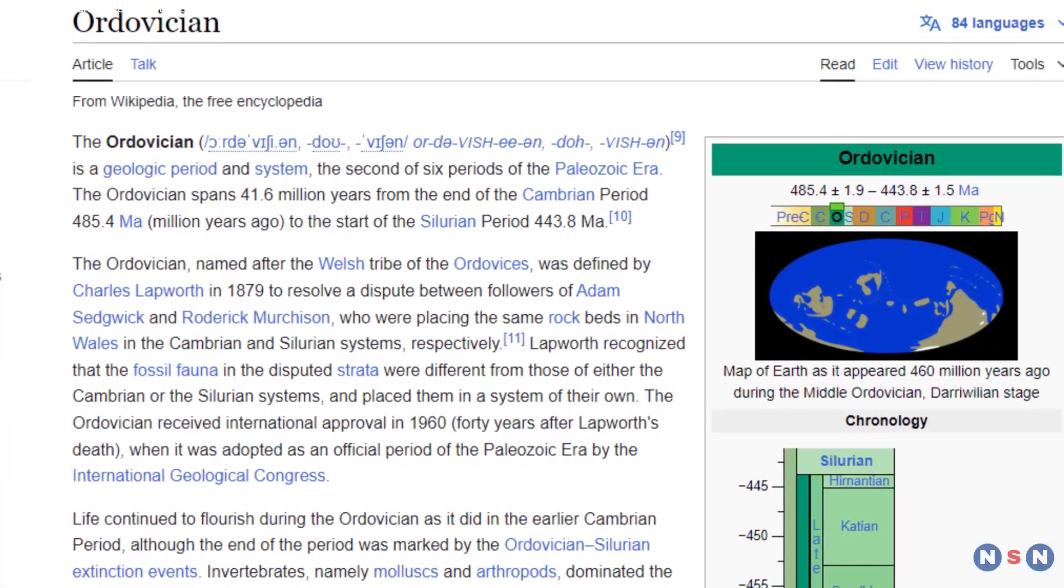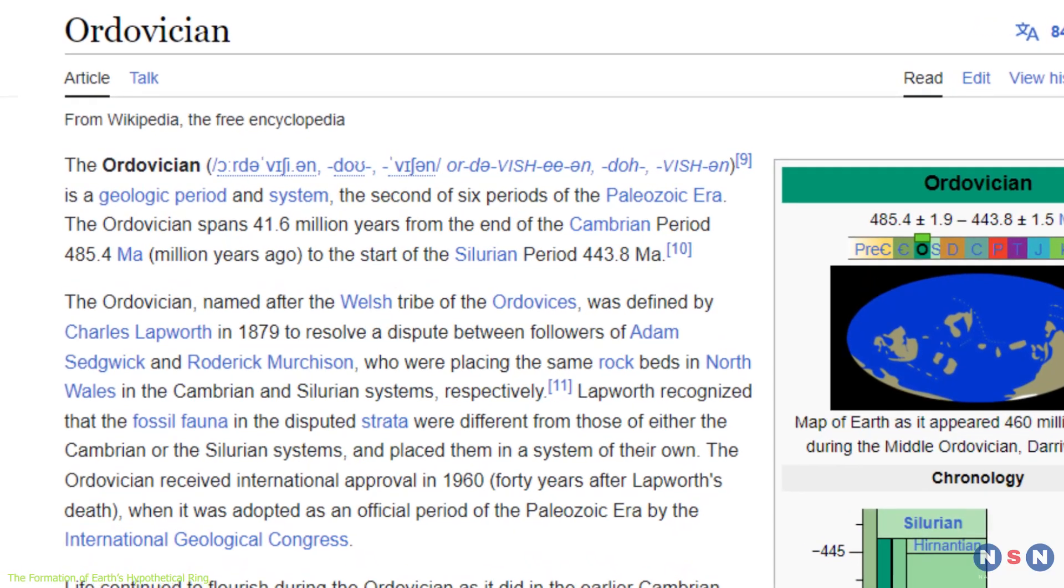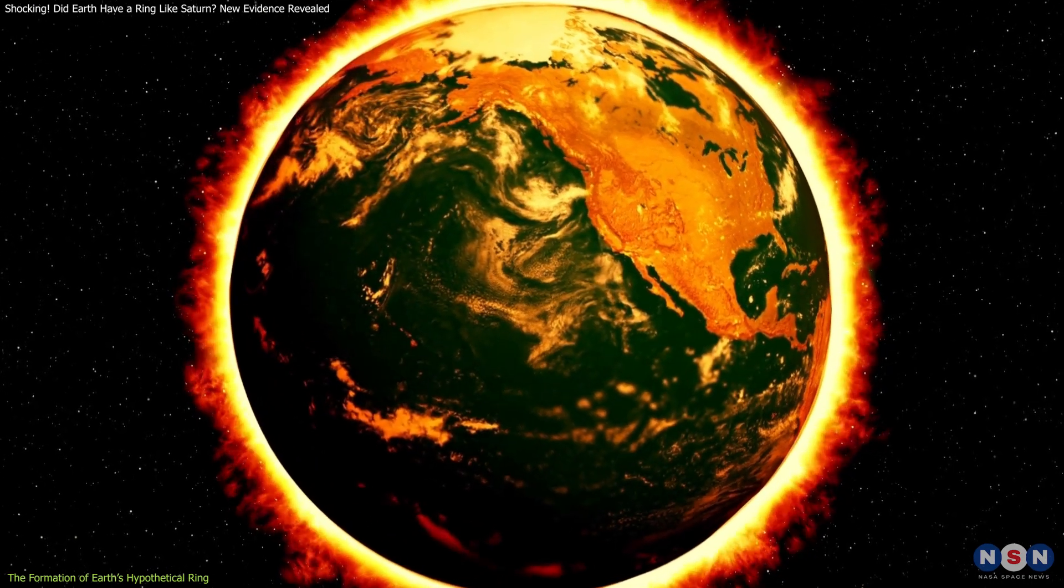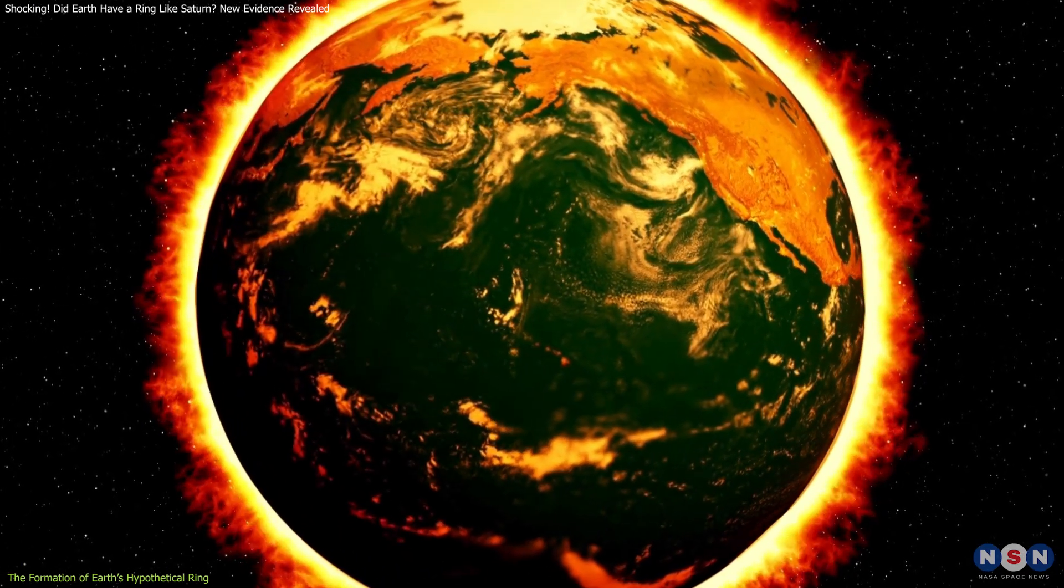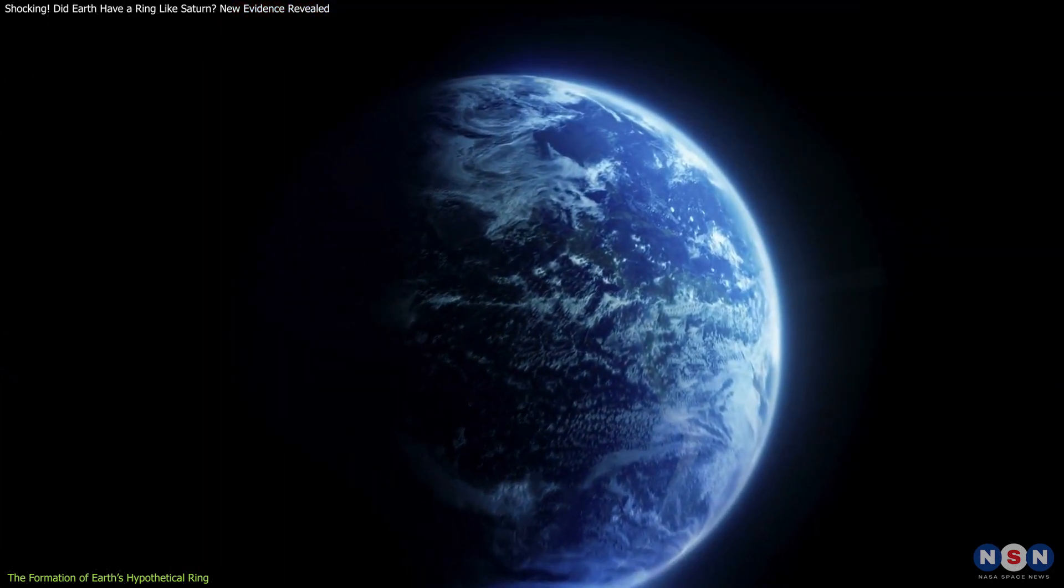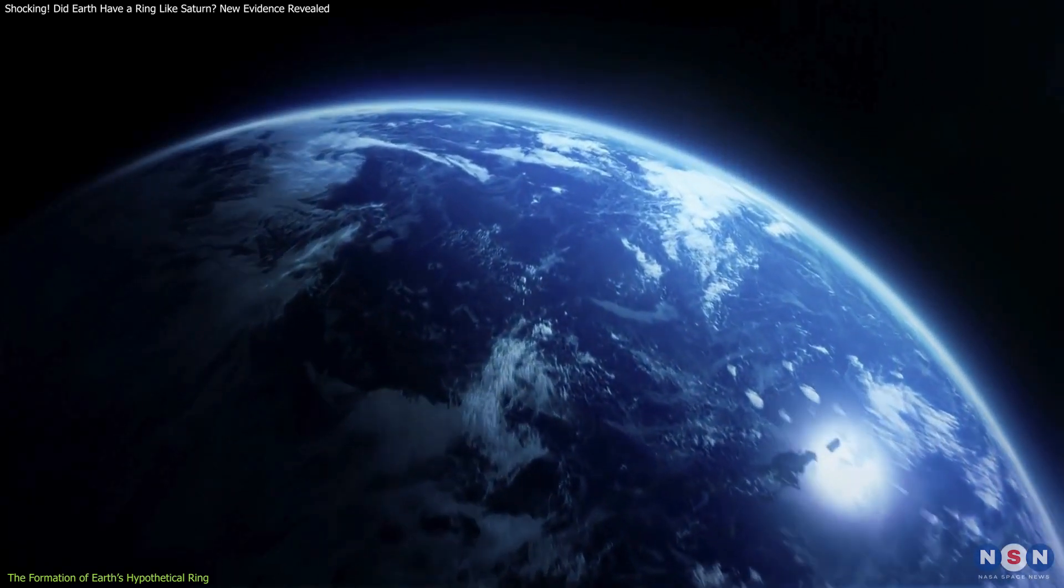The story begins 466 million years ago during a period known as the Ordovician. At this time, Earth was a very different place. The continents were positioned differently and the climate was generally warmer, except for a massive glaciation event that some scientists believe may have been influenced by an extraordinary cosmic event.